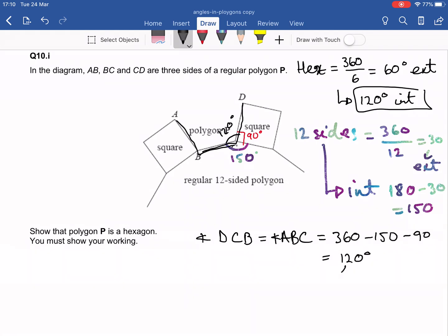So 120 degrees is one interior angle in a hexagon. Therefore, P is a hexagon. There you go. The end.